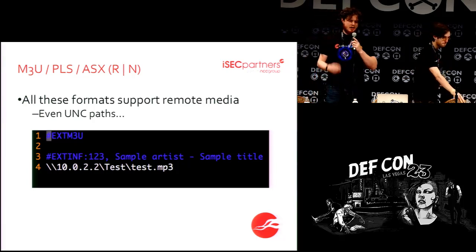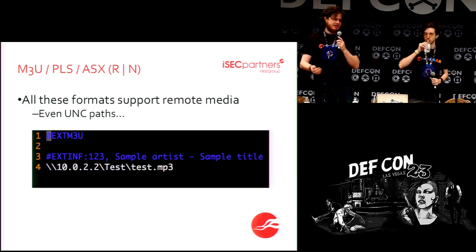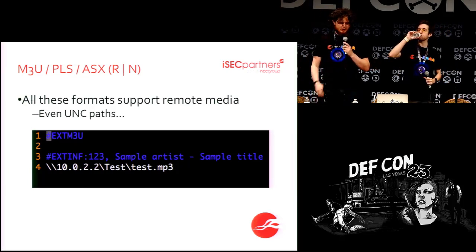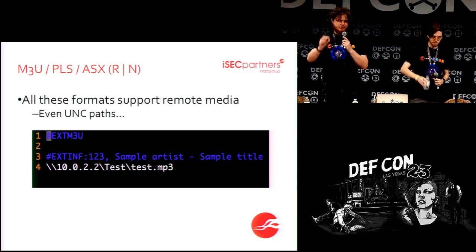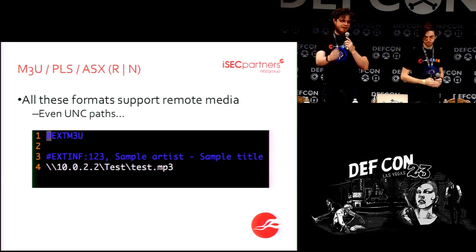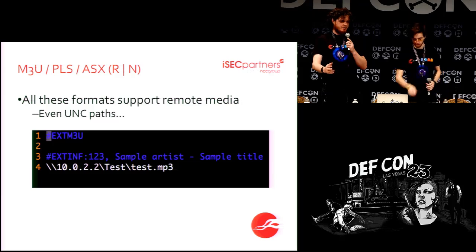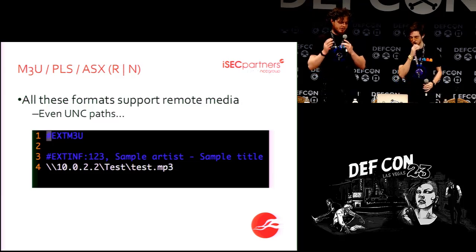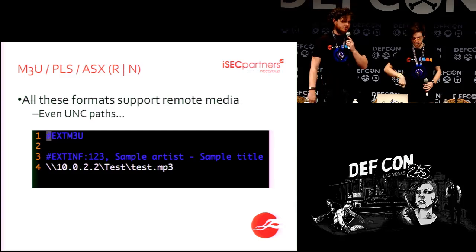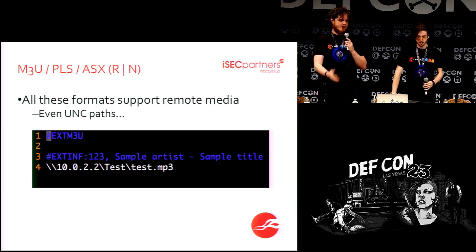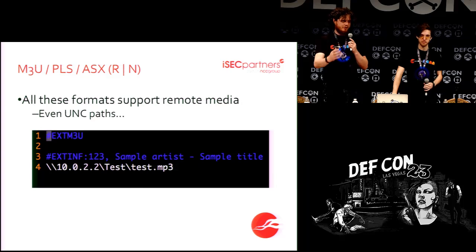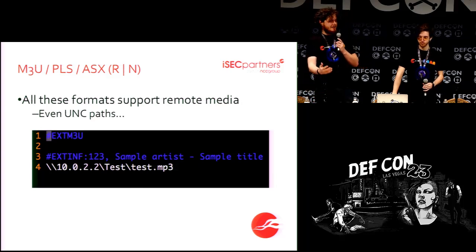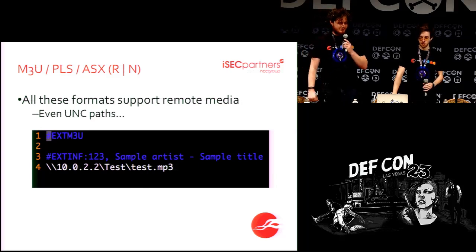The next formats are M3U, PLS, and ASX — basically all of the playlist formats. The core goal of these formats is to have a list of media files played in sequential order, so obviously they can make remote references. What is perhaps less obvious is that they're allowed to reference UNC paths. I have never had a playlist that needed a legitimate reference to a UNC path. But it is a feature. So you open our little playlist and we get your credentials.